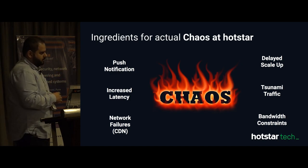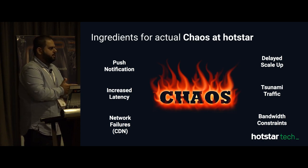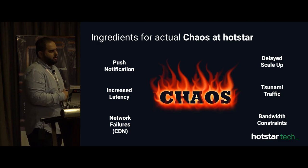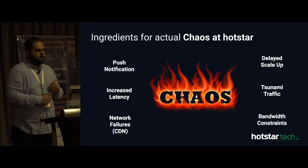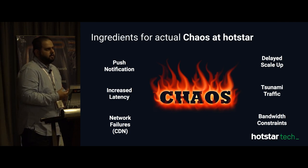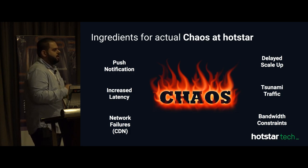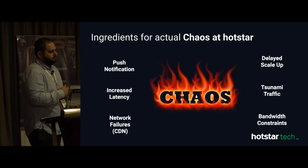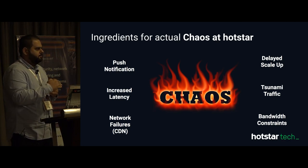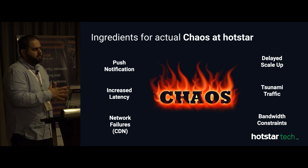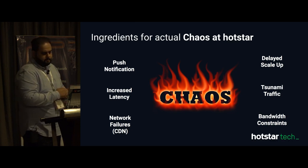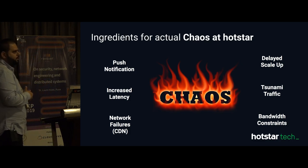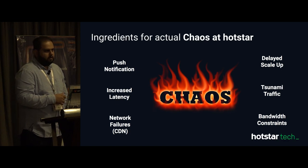This year while preparing for game days, we came up with an internal project where we now know the rated capacity each application can support and the breaking point of each system. With chaos engineering and load testing, the visibility we get for each application is how much RPS it can support and what is the breaking point. When that breaking point is about to be reached, we apply some techniques to give the service a breathing room so services are not impacted.